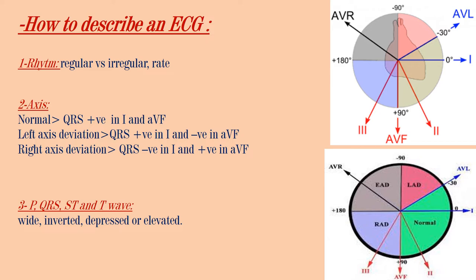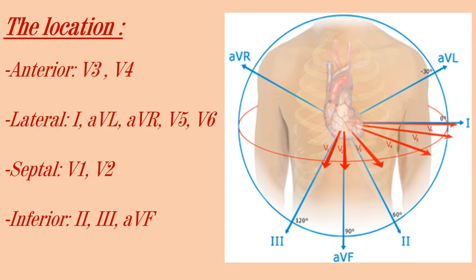We also look for the P wave, the QRS complex, the ST segment, and the T wave — whether it's tall, inverted, depressed, or any abnormal shape. Knowing the location of the leads is also important: the anterior side of the heart is represented by V3 and V4, the lateral side by lead 1, aVL, aVR, V5, and V6, the septal part by V1 and V2, and the inferior part by leads 2, 3, and aVF.